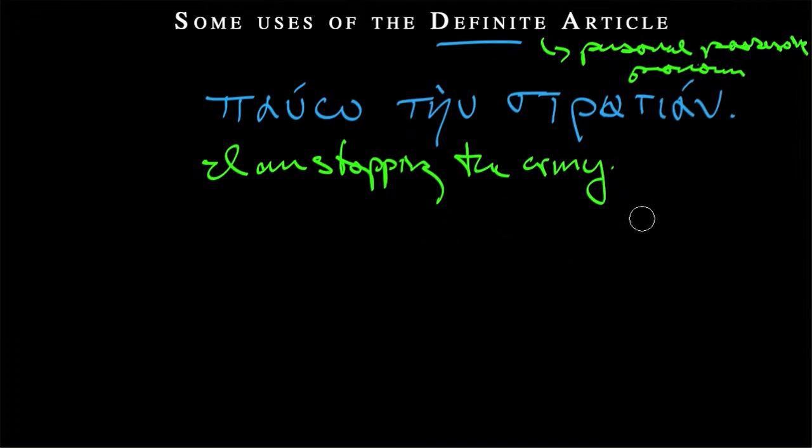In French, that's no problem. They would say I wash the hands, les mains. And people would understand and intuit that 'the' must be referring to a possession. So if you come across this sort of sentence, I stop the army, in Greek, and you know that the speaker is a general, you might think that pauo tein stration might be either I am stopping the army or maybe more accurately, in this case, my army.